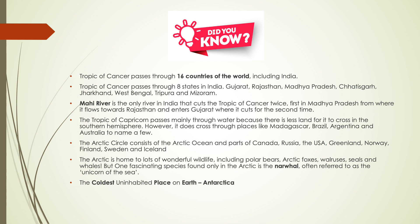The Tropic of Capricorn passes mainly through water because there is less land for it to cross in the southern hemisphere. However, it does cross through places like Madagascar, Brazil, Argentina, and Australia, to name a few. The Arctic Circle consists of the Arctic Ocean and parts of Canada, Russia, the USA, Greenland, Norway, Finland, Sweden, and Iceland.